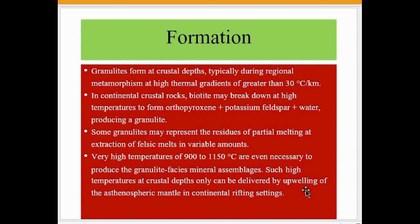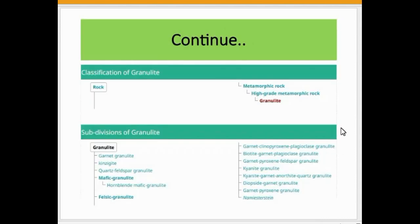This much temperature actually comes from upwelling from the asthenosphere in continental rifting settings and forms granulite rocks. Looking at the classification of granulite — granulite is a high-grade metamorphic rock with several subdivisions.